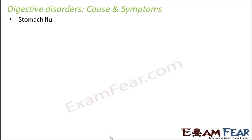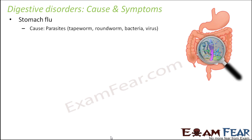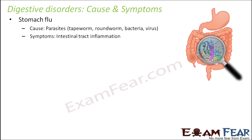Stomach flu is caused by parasites like tapeworm or roundworm, or bacteria or viruses which live in our intestine. When these microorganisms are present in our intestine, we have problems like stomach flu. The intestinal tract gets inflammation — the intestine becomes swollen — and that is the key symptom indicating that a person is suffering from stomach flu.